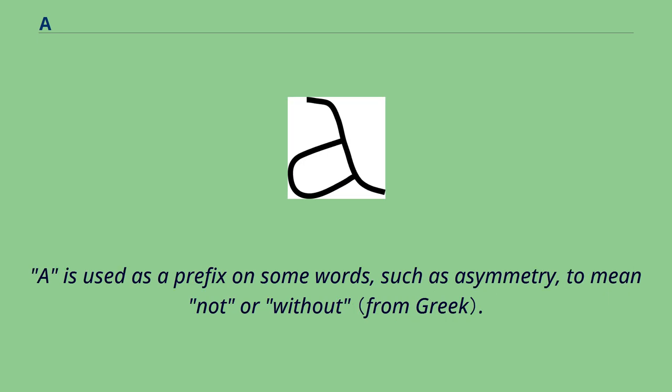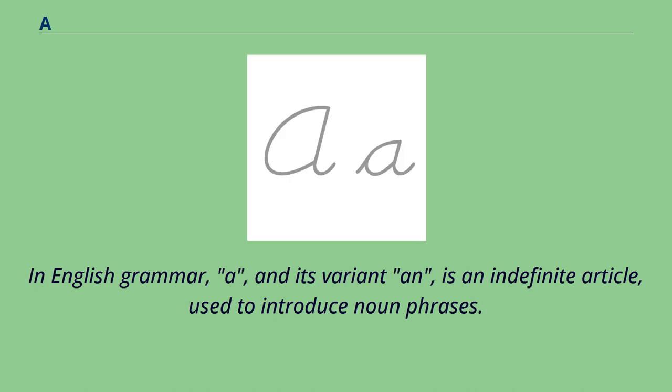A is used as a prefix on some words, such as asymmetry, to mean not or without. In English grammar, A and its variant an is an indefinite article used to introduce noun phrases.